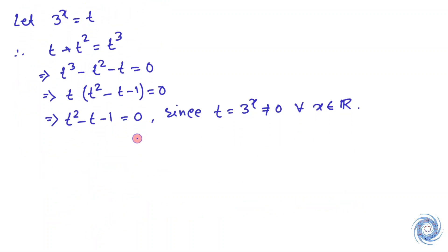This is a quadratic equation in t. Now we can solve this quadratic equation using the Sridharacharya formula. From here we have t squared minus t minus one equals zero.